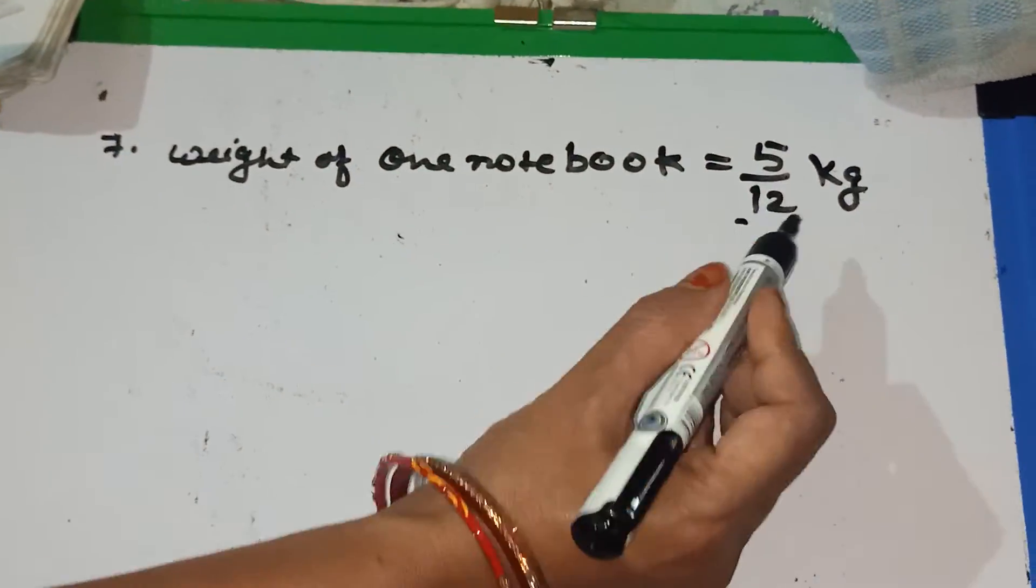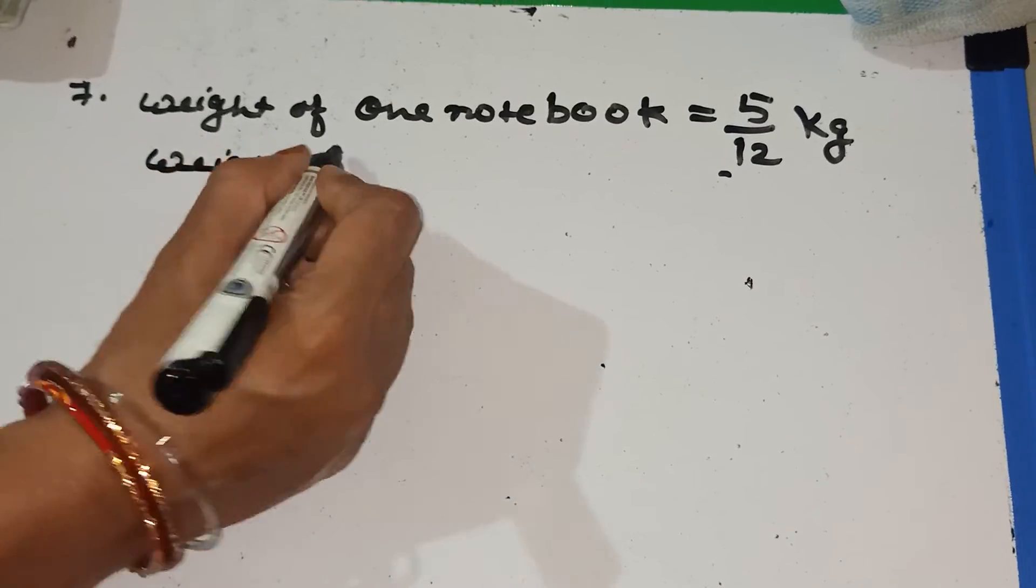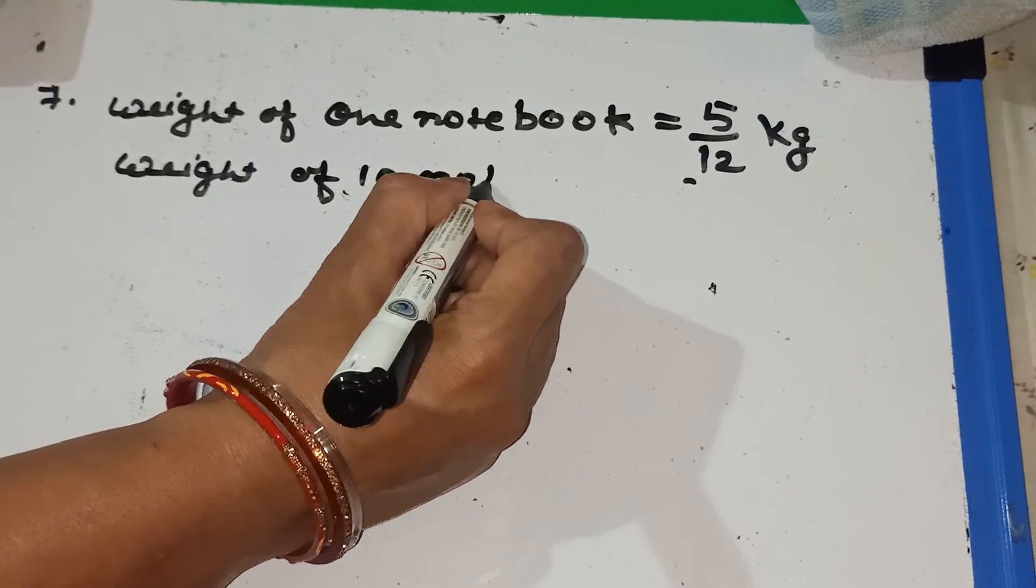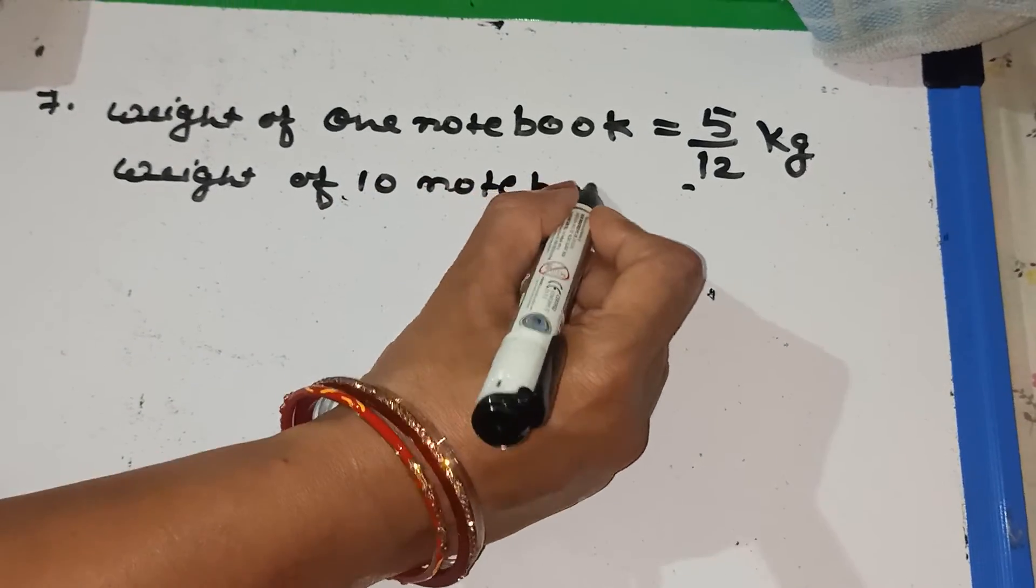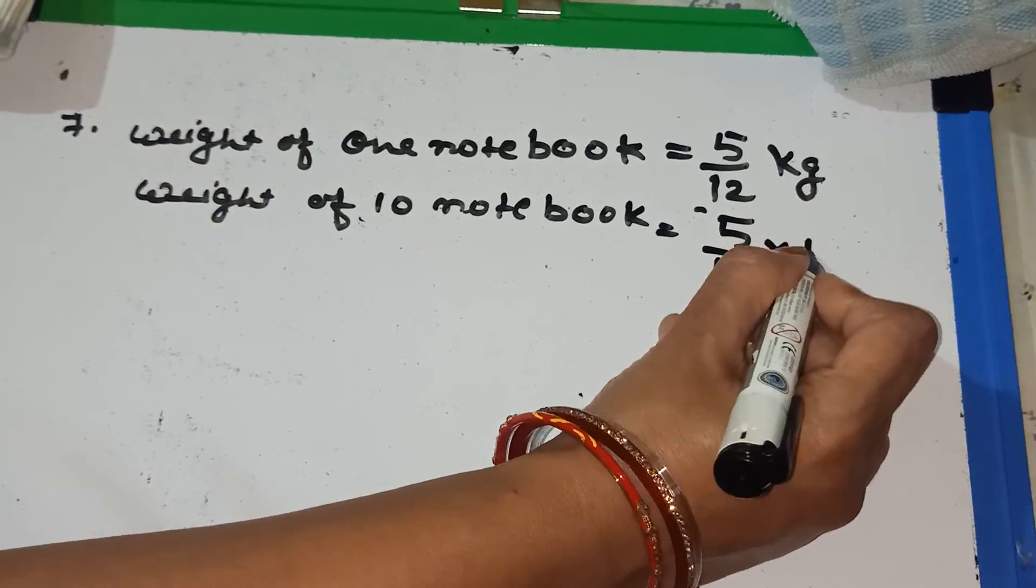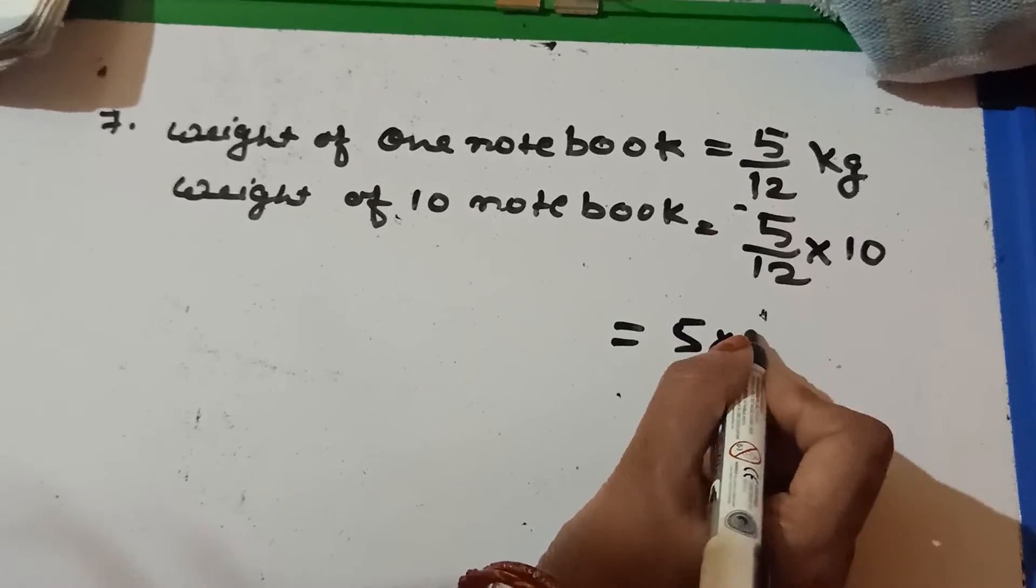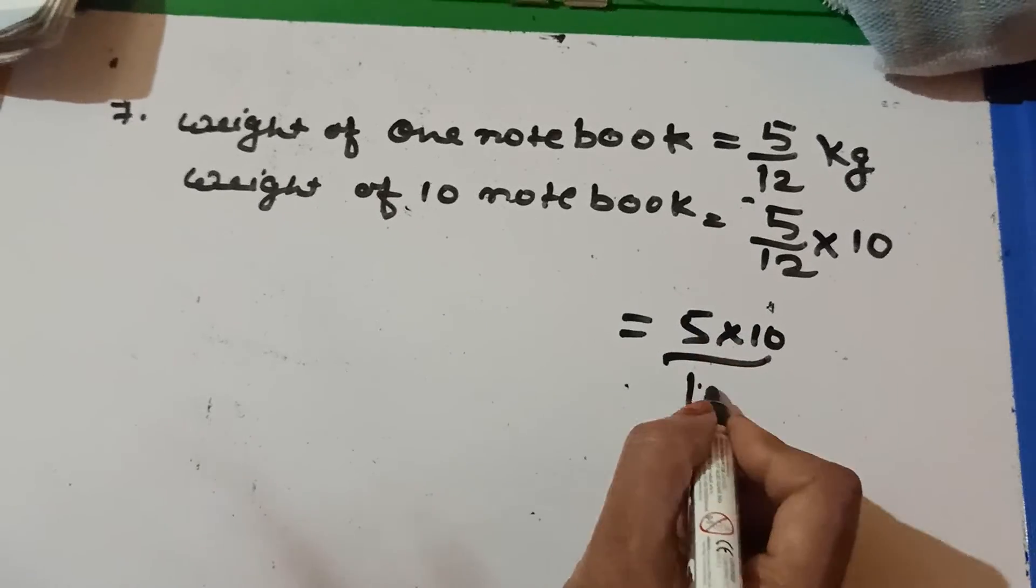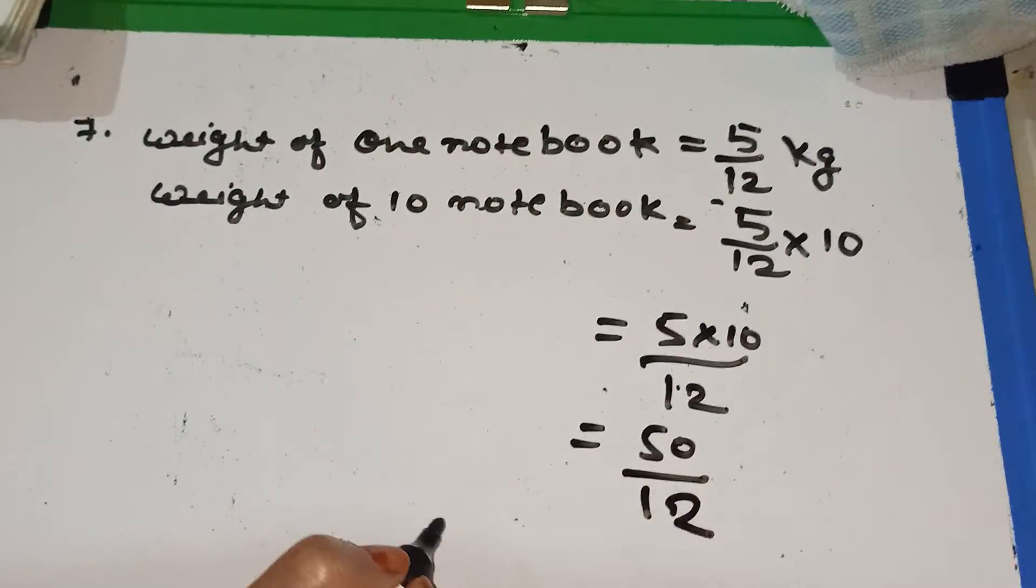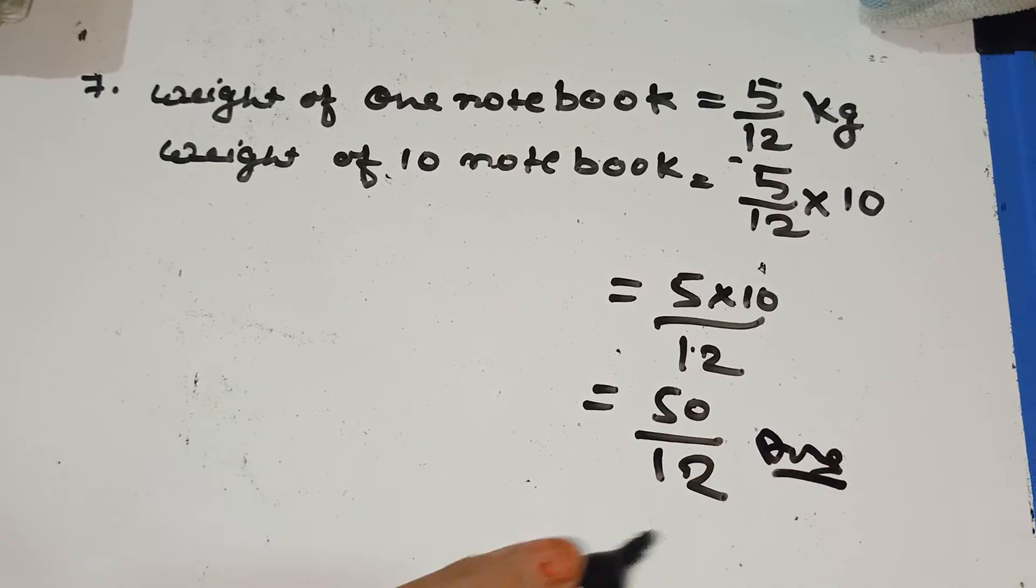Now find the weight of 10 such notebooks. So 1 notebook weight is 5 by 12. So weight of 10 notebooks is equal to 5 by 12 multiplied by 10. And the same we will do 5 into 10 by 12. And it is 50 by 12. It is the answer of this question.